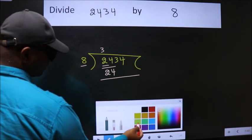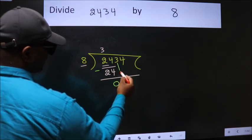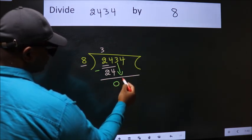Now, we should subtract. We get 0. After this, bring down the beside number. So, 3 down.